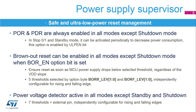STM32G0 devices embed an ultra-low-power brown-out reset, called BOR, which is active periodically instead of continuously monitoring the power voltage. The BOR ensures reset generation as soon as the MCU power supply drops below the selected threshold, regardless of the VDD slope. Four thresholds from 2.0 to 2.95 volts can be selected by option byte programmed in flash memory, independently for rising and falling edge. It can also be disabled to save power consumption.